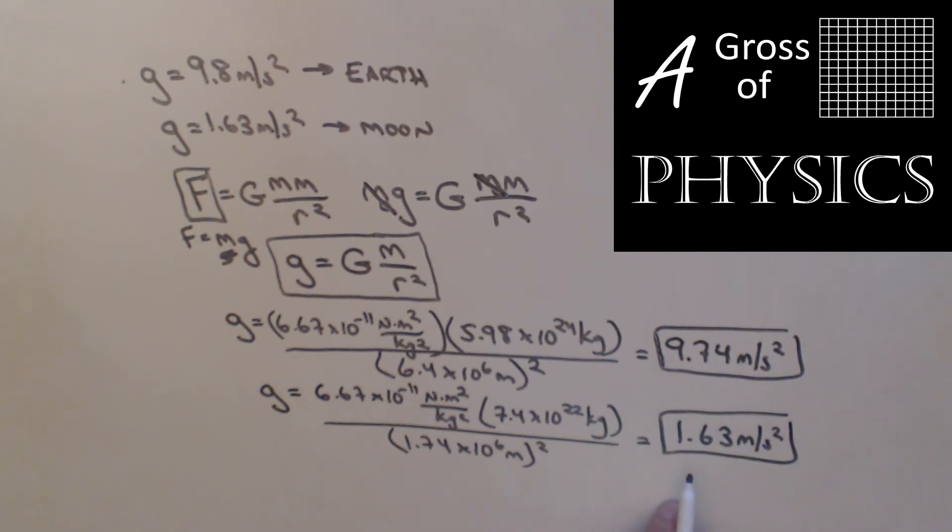Obviously, since we use 1.63 as our value, these are rounded less than the values for the earth. But that's how you find g for any object. You need big G, which is a universal constant, the mass of the object, and the radius of the object. So you can figure out the g of any object that you care to find.